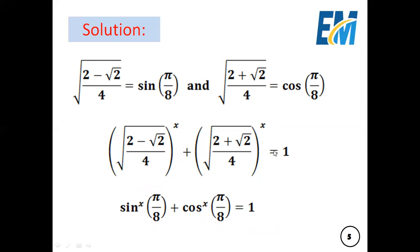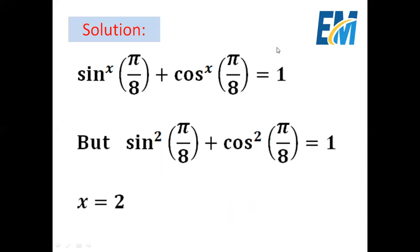Now, back to our original equation — this is the last result we found. Square root of (2 minus square root of 2) over 4, all to the power x, plus square root of (2 plus square root of 2) over 4, to the power x, equals 1. We found that square root of (2 minus square root of 2) over 4 equals sine of pi over 8, and square root of (2 plus square root of 2) over 4 equals cosine of pi over 8. So the equation becomes: sine to the power x of pi over 8 plus cosine to the power x of pi over 8 equals 1.